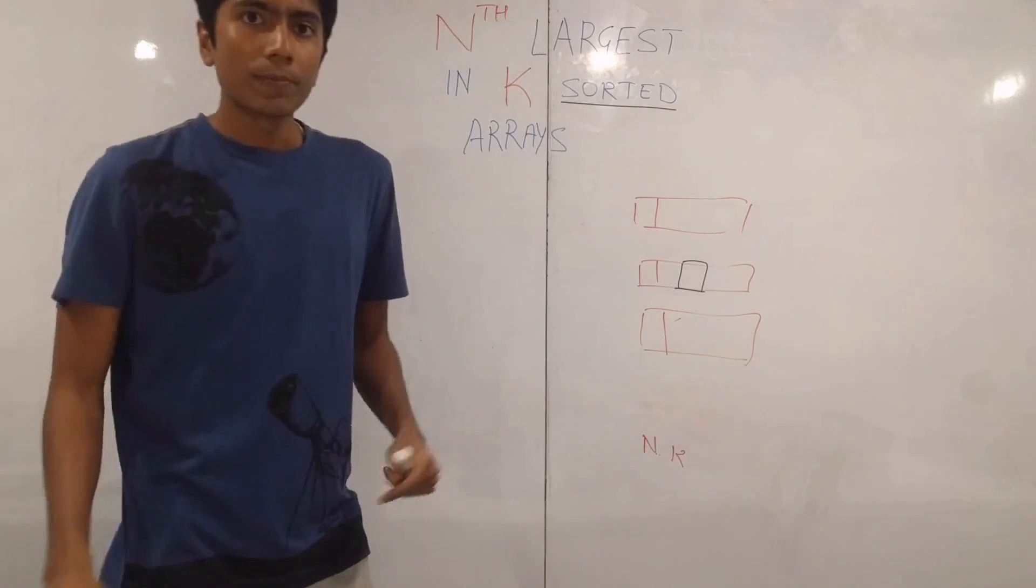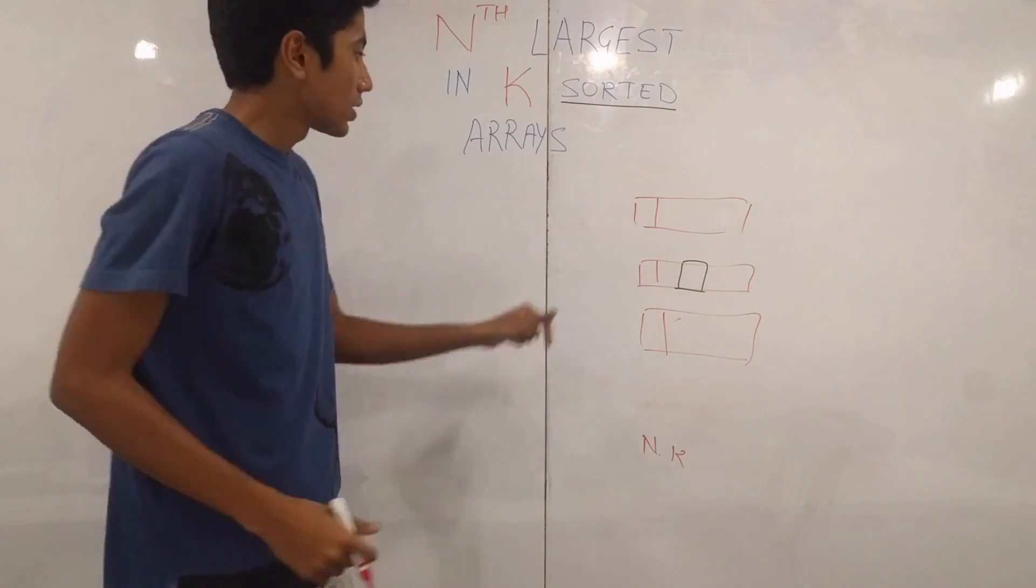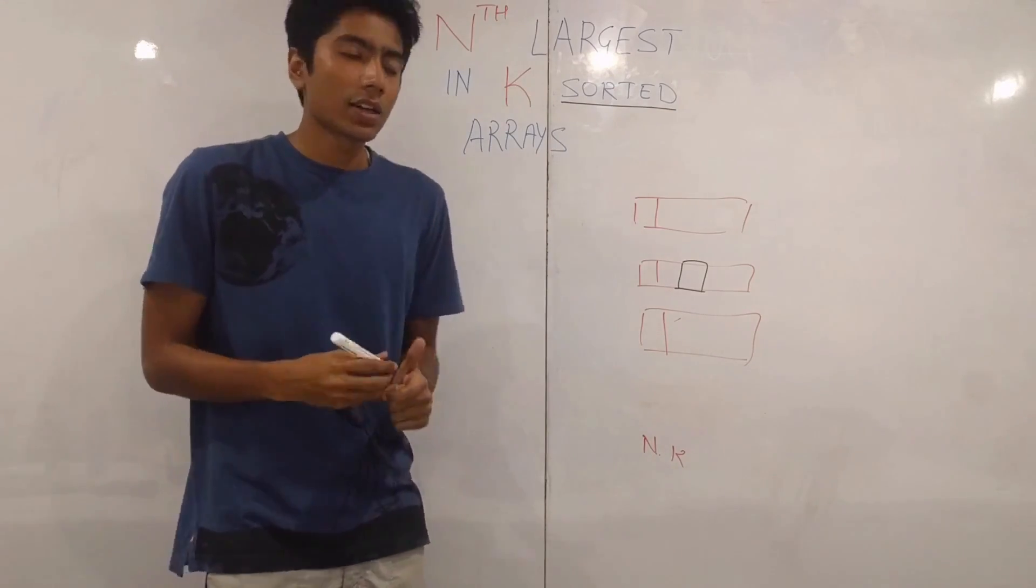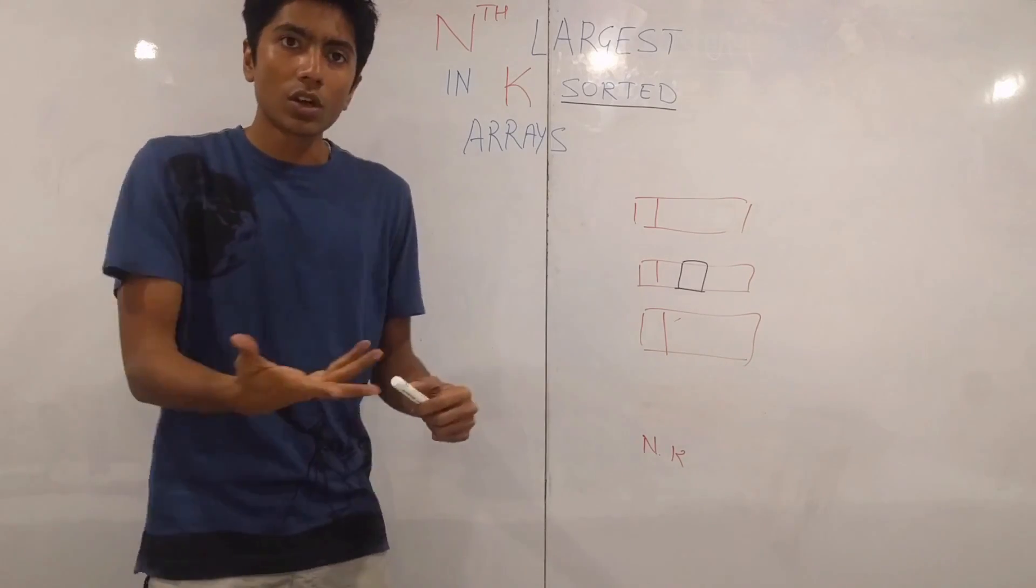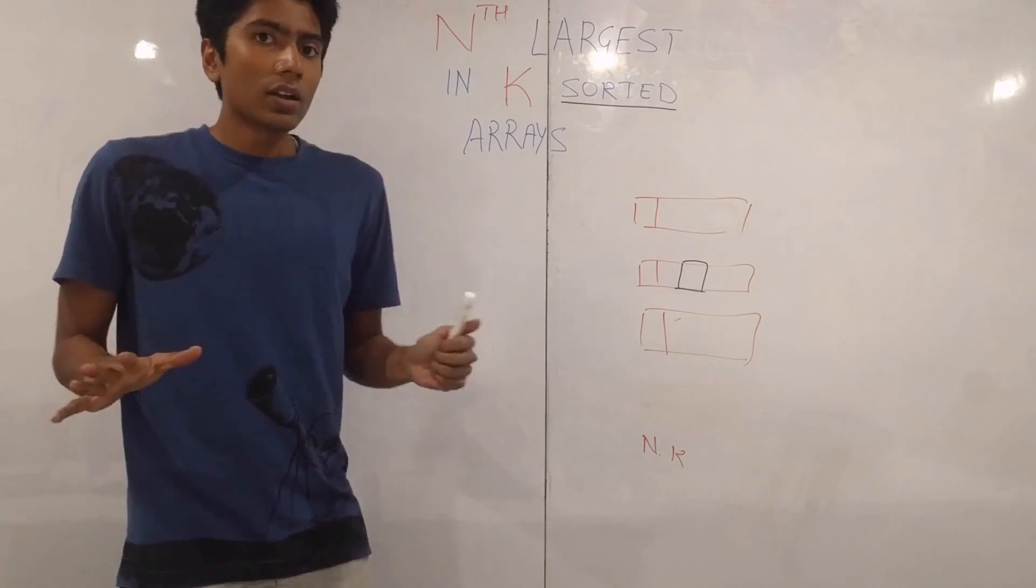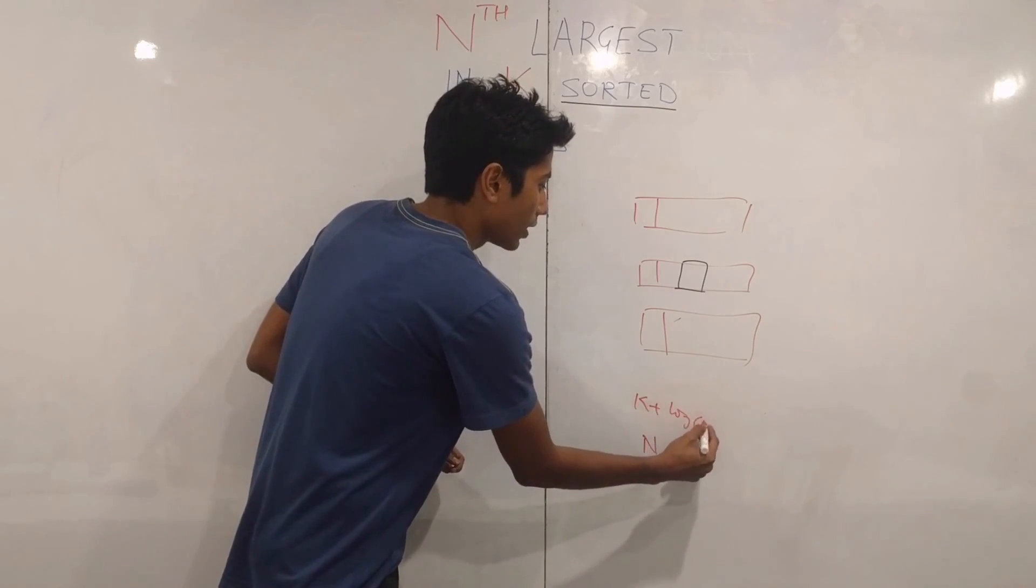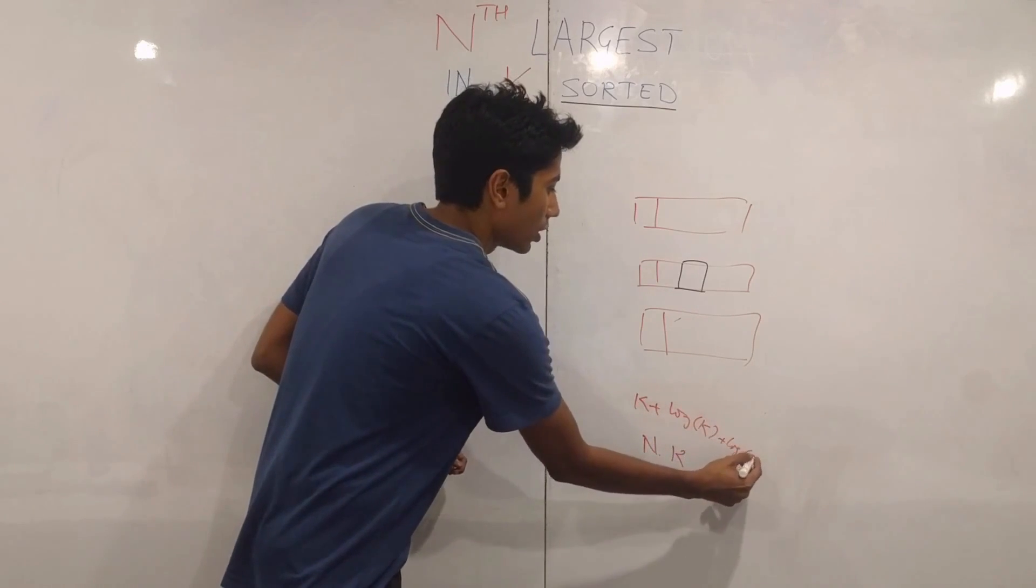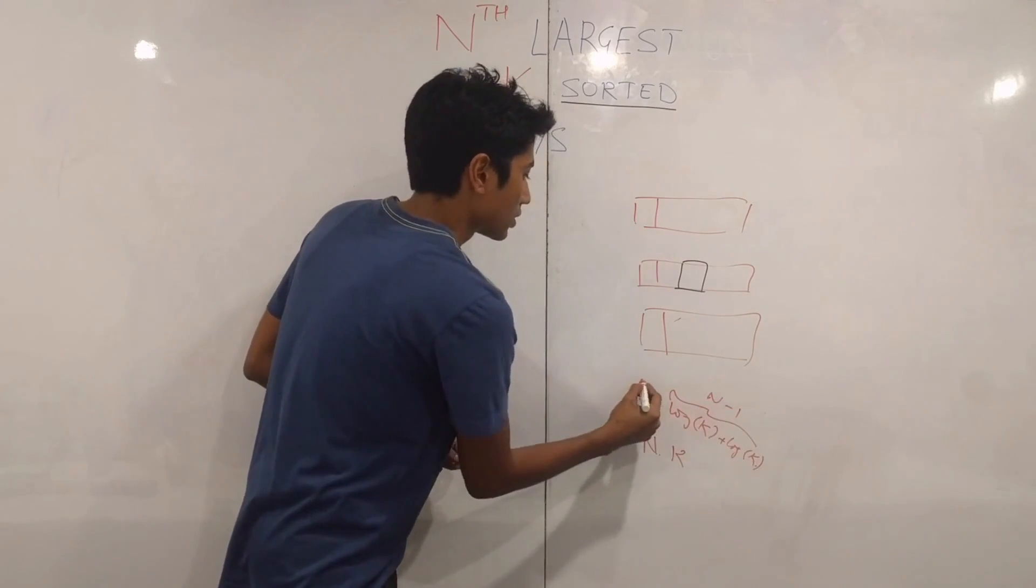You can do slightly better actually by keeping a heap of the top k elements and then maintaining that data structure. When you get the smallest you remove the smallest and when you get a new element you insert that into the heap. So that will take you k plus log k plus log k and this is n minus one times. This is the first time.